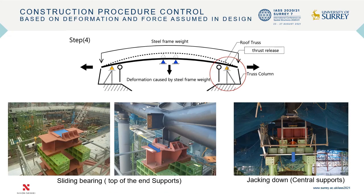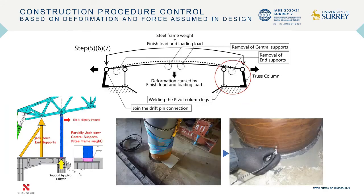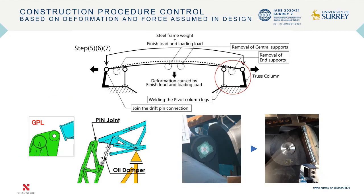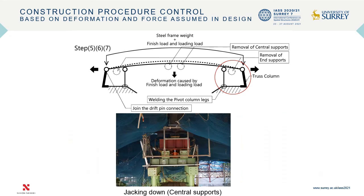Step 4: The thrust was released by sliding the sliding bearing on the end supports horizontally, while jacking down the central supports. Step 5: Pivot column bases were welded. Step 6: The drift pin connection was connected with the truss column. Step 7: The end supports and central supports were jacked down to transmit the weight of the roof to the pivot columns.